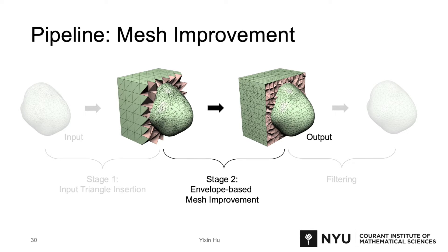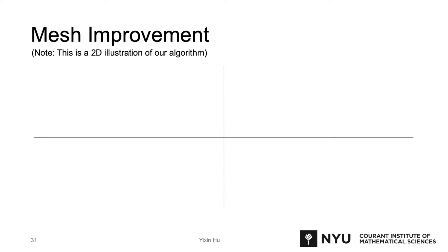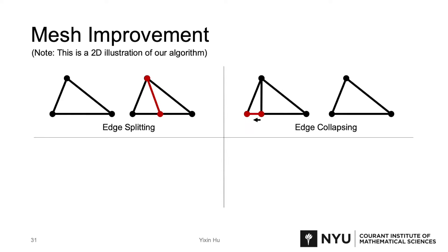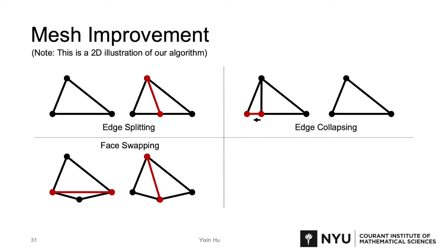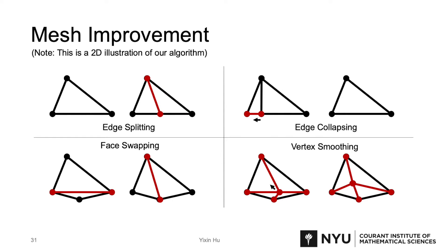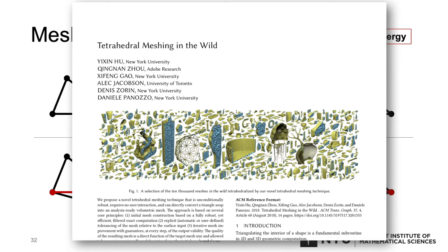The second stage is envelope-based mesh improvement. We use four local operations: edge splitting, edge collapsing, face swapping, and vertex smoothing. In this step, we minimize the conformal AMIPS 3D energy of the mesh. We use the same mesh improvement method introduced in TetWild's paper — please refer to that paper for more details.